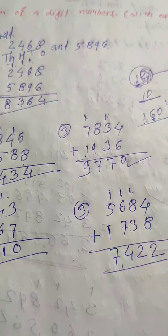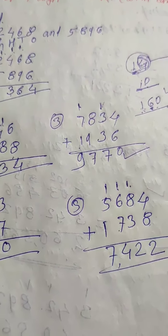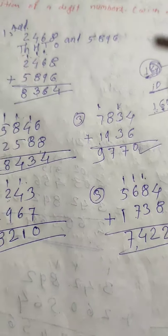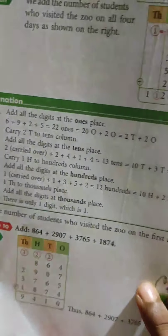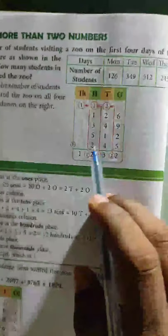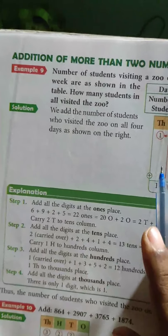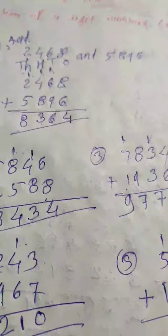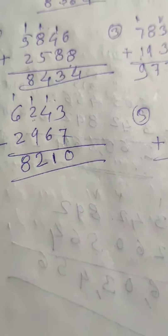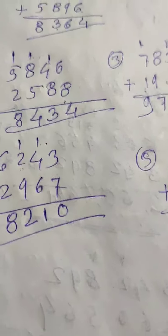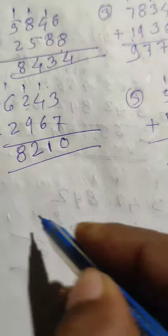You can carry mentally or you can write it above. Next is addition of more than two numbers. So here you will be given more than two numbers and you have to add them. Let's see one example here.